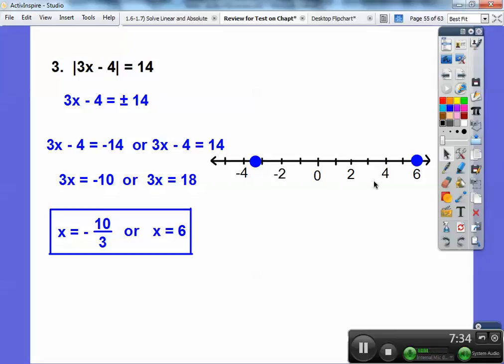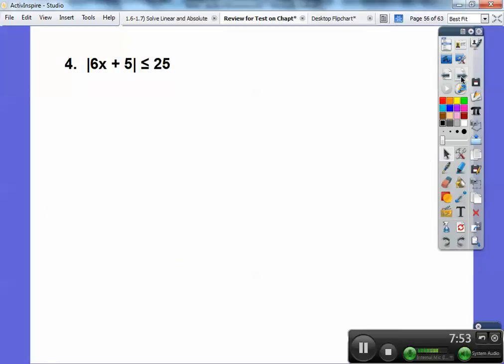When you solve each one of those, then you put dots on the numbers that you get. So here I did plus 4 plus 4. -14 + 4 is -10. Plus 4 plus 4 is 18. Then I divide it by 3. 3 goes into that -10 thirds, which is -3 and a third, which is right there. And then 3 goes into that 6 times.